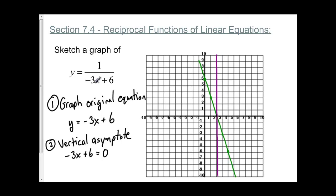If I substitute x equals 2 into my equation, I would get negative 6 plus 6, which gives me a denominator of 0 — which we know can't happen. So that confirms my vertical asymptote.